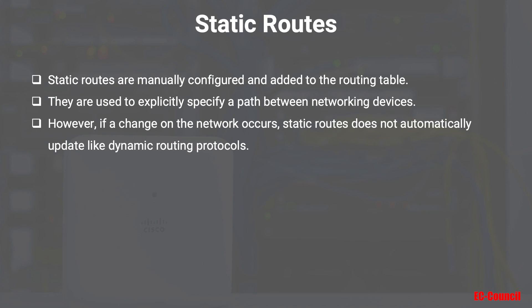Static routes are the manual way of configuring routes into the routing table. A router will not automatically install a remote route in its routing table — it needs to either be statically configured by the network engineer or dynamically learned by a dynamic routing protocol. With static routing, they are used to explicitly specify a path between network devices, and the router will always choose that path to reach the specified destination. However, if a change on the network occurs, static routes do not automatically update within the routing table, like dynamic routing protocols do.